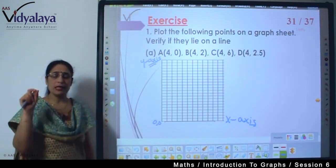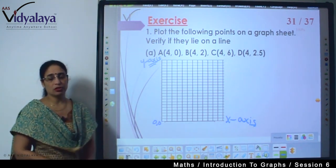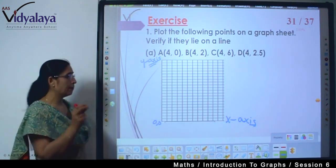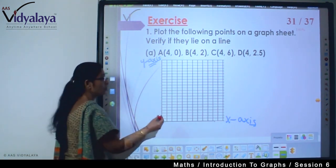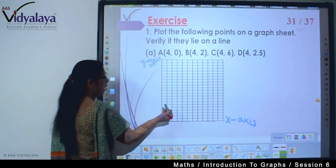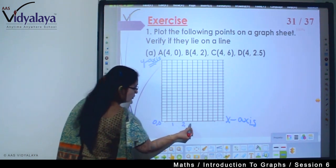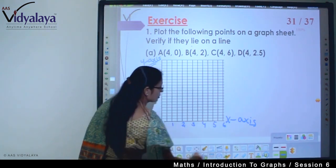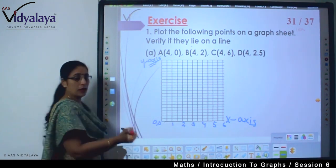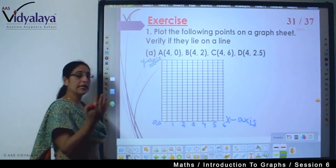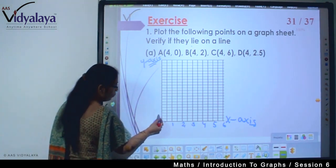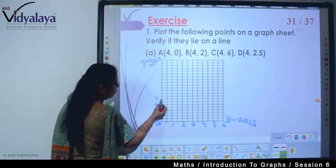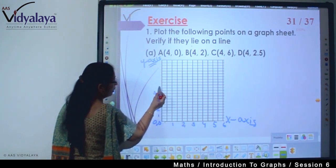You have centimeter graph paper or inches graph paper. Based on what you have, give the counting with the blocks. I will make two blocks equal to one unit so it's clearly visible. I'm marking zero, one, two, three, four, five, and six.